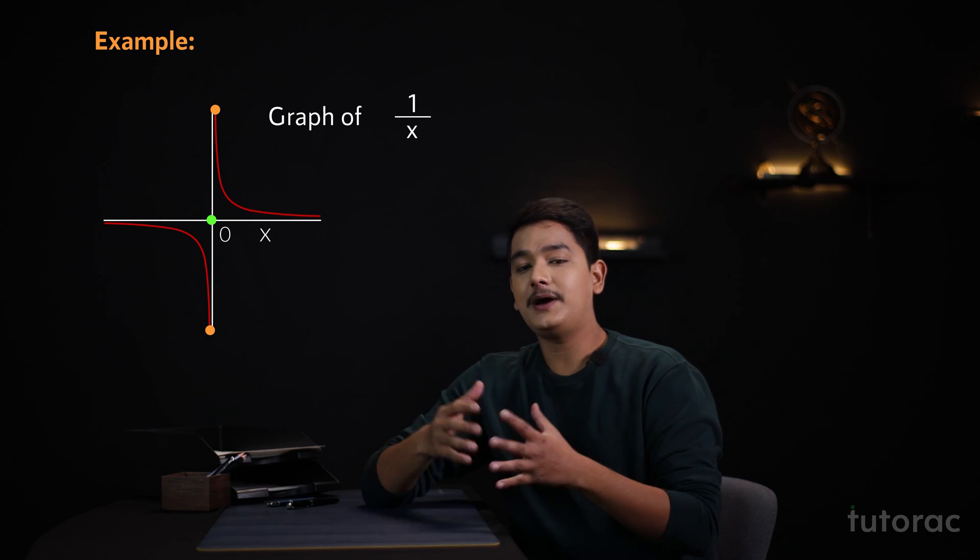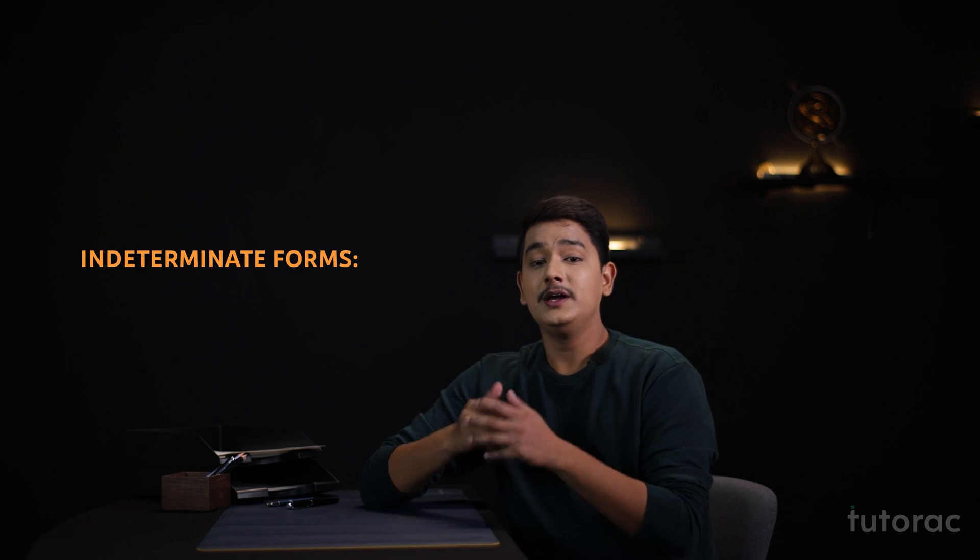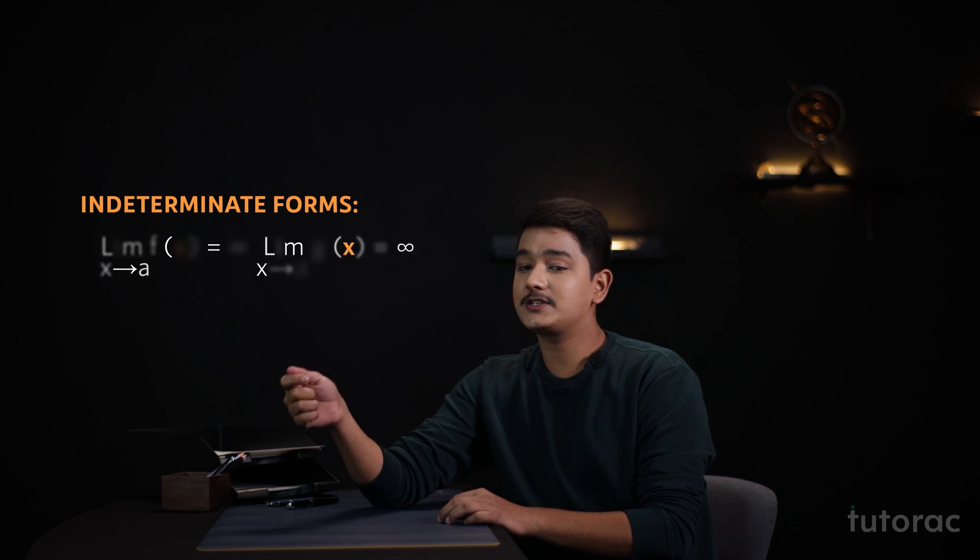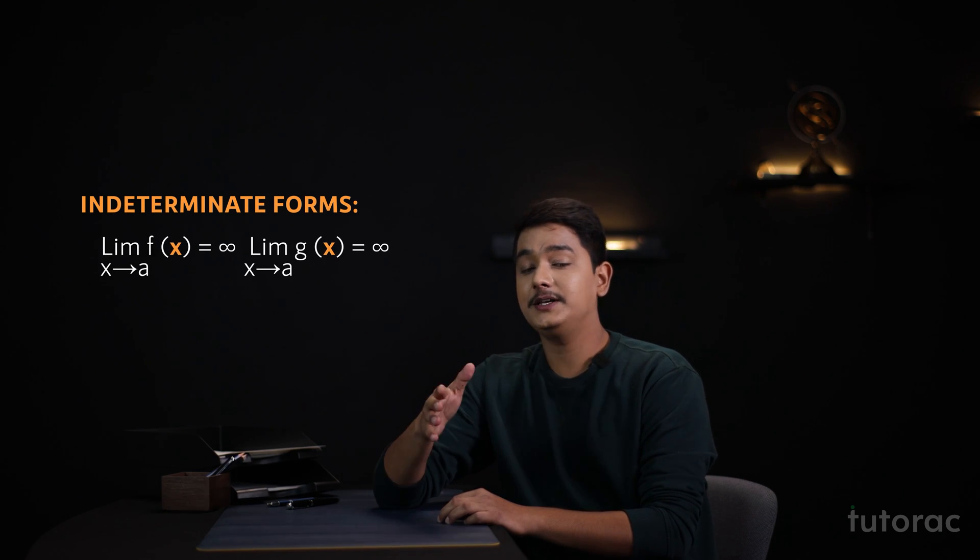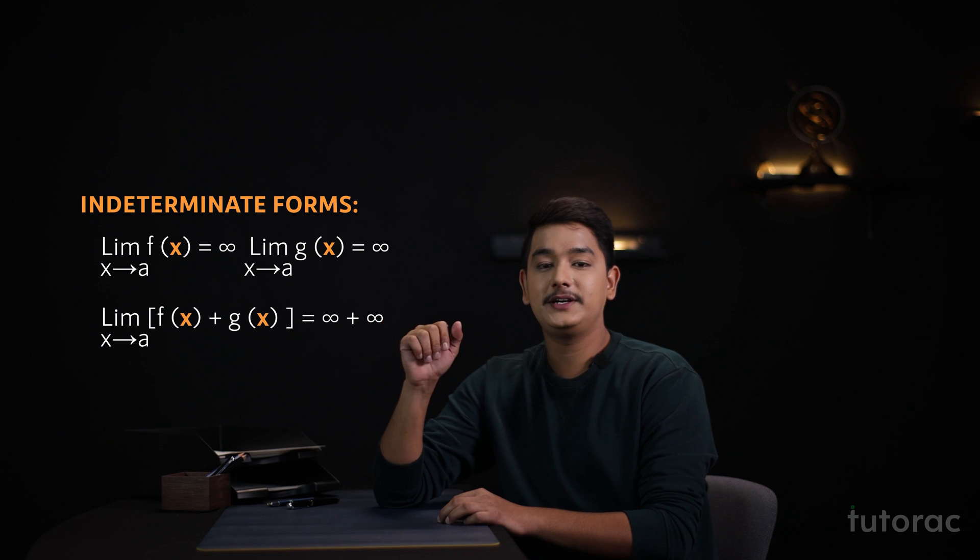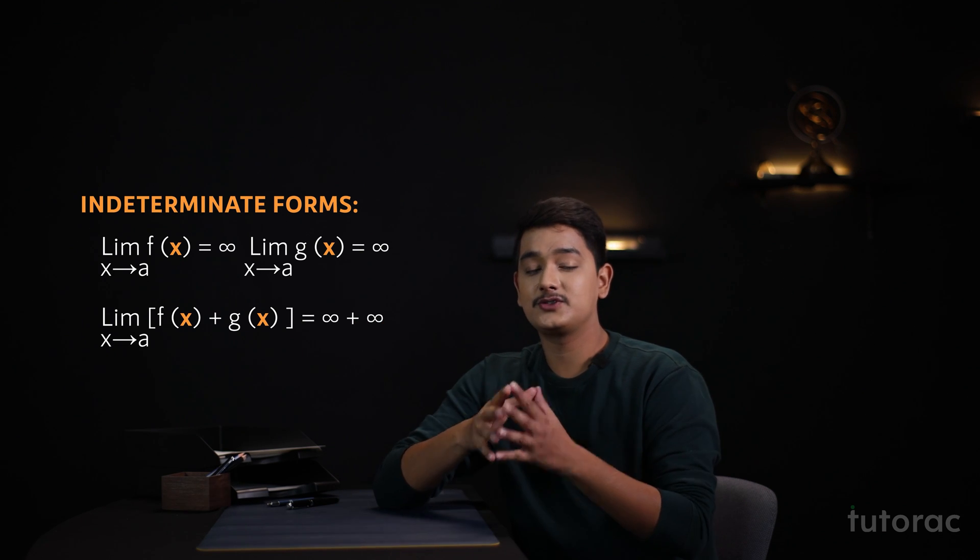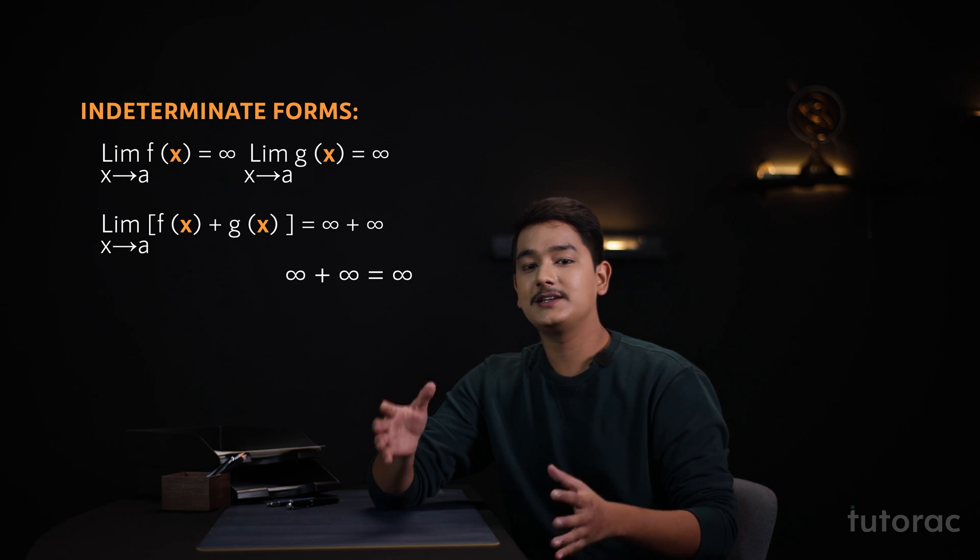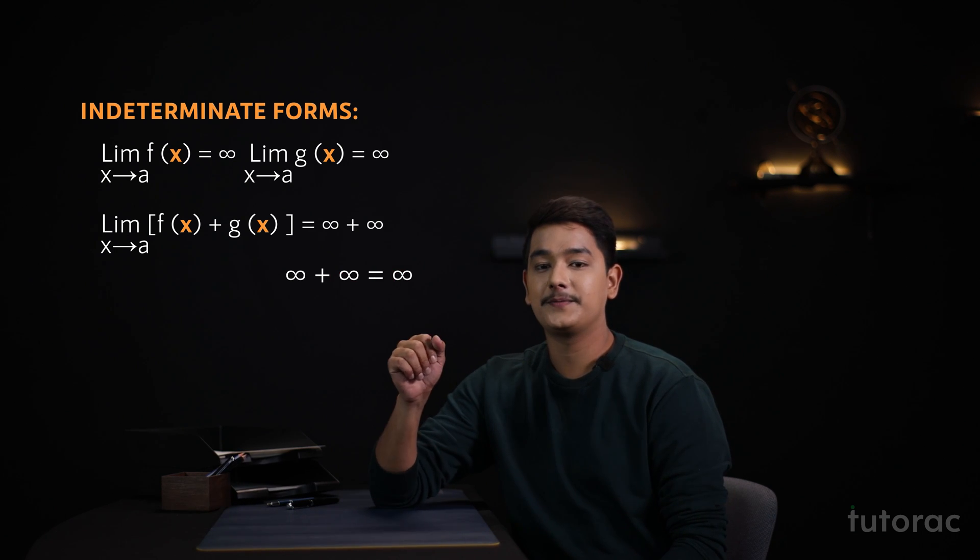Now let's come back to the main concept that is indeterminate forms. If we take two functions and they are being added and we have to find the limit of this function, suppose the limit of these functions are approaching to infinity, then we will get infinity plus infinity as our answer. Infinity plus infinity will be equal to infinity as they can be added.